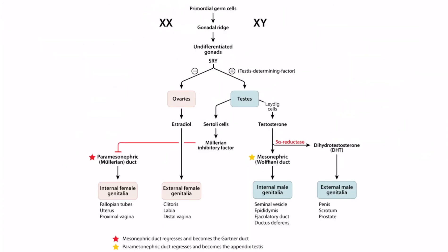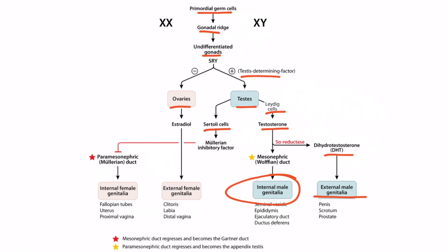Let's review what we've discussed so far. The primordial germ cells migrate to the gonadal ridge and become undifferentiated gonads. If the SRY gene is present, it produces testis determining factor, and the undifferentiated gonads become testes; if not, the gonads become ovaries. The Sertoli cells secrete Müllerian inhibitory factor, which causes degeneration of the paramesonephric duct, and the Leydig cells secrete testosterone, promoting the development of internal male genitalia. Testosterone is converted to dihydrotestosterone, or DHT, by the enzyme 5-alpha reductase. DHT is the more potent form and is responsible for the development of the external male genitalia. Estradiol from the ovaries promotes the development of the external female genitalia.